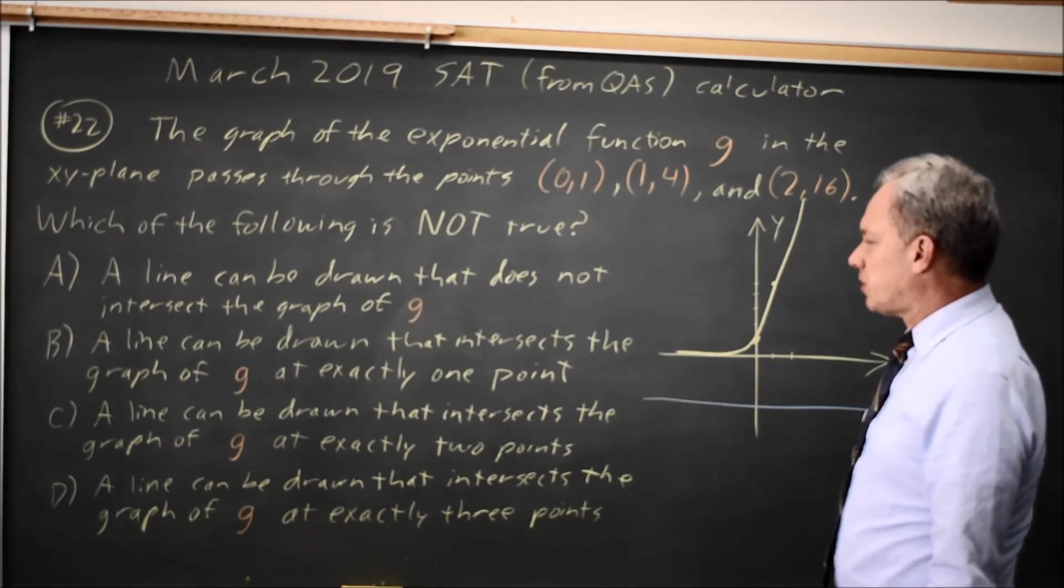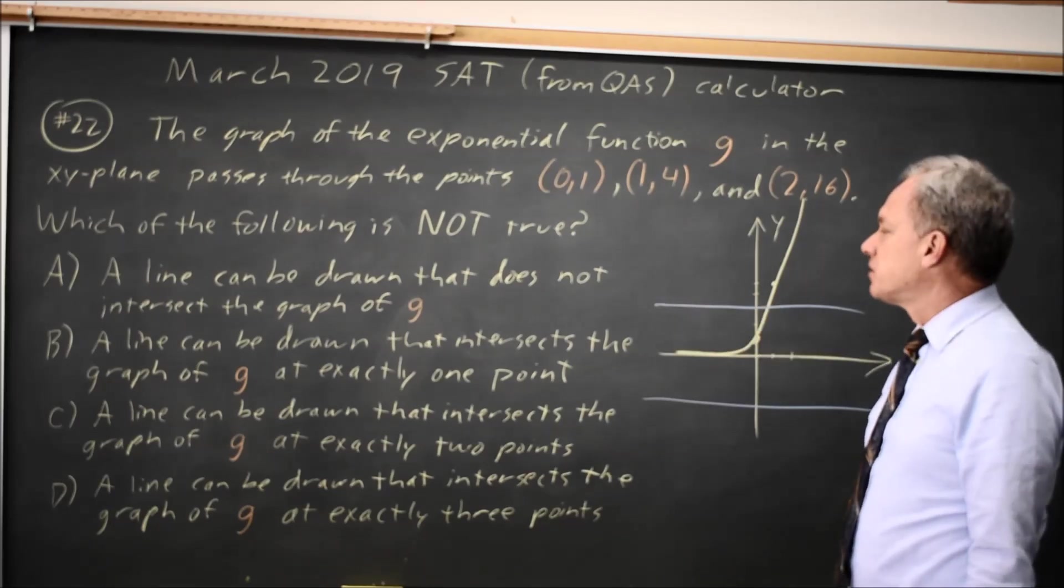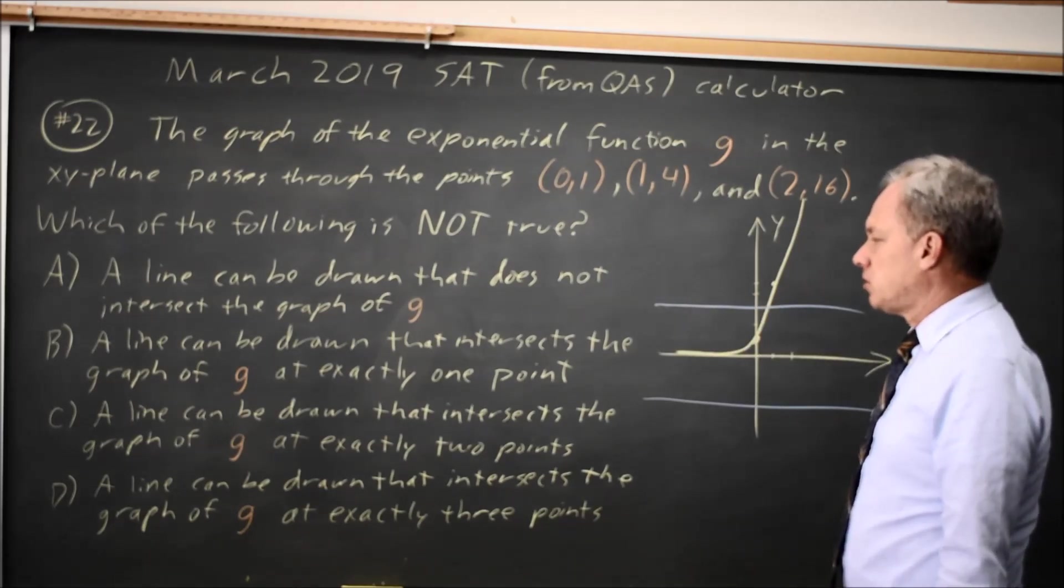Choice B, a line can be drawn that intersects the graph at exactly one point. A horizontal line with a positive y value will intersect at exactly one point.